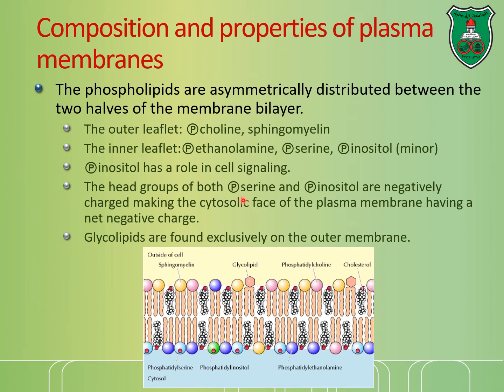The head groups of both phosphatidylserine and phosphatidylinositol are negatively charged, giving the inner side of the plasma membrane a net negative charge. Importantly, glycolipids and glycoproteins are mainly found on the outside of the cell.